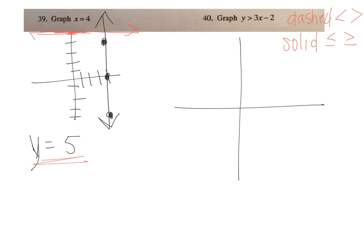So according to slope-intercept form, my y-intercept is negative 2. And my slope is 3. So I'm going to go up 3 over 1, and connect it with a dashed line because it's just greater than, not greater than or equal to.